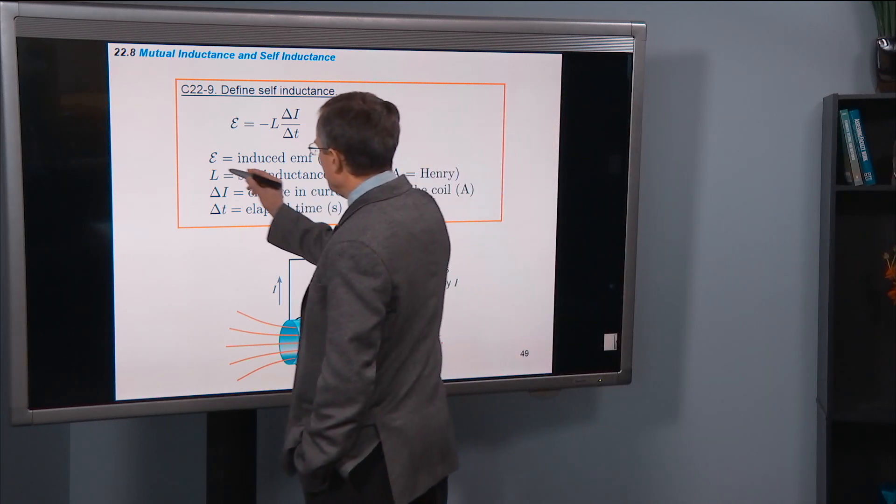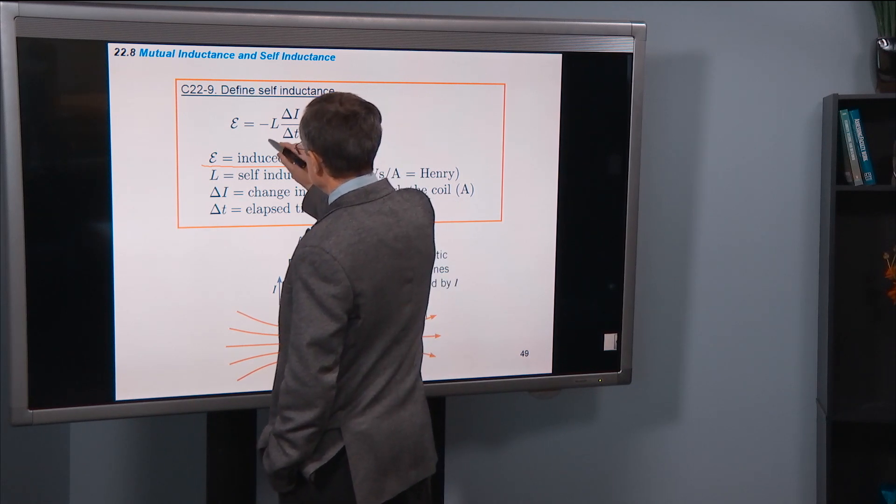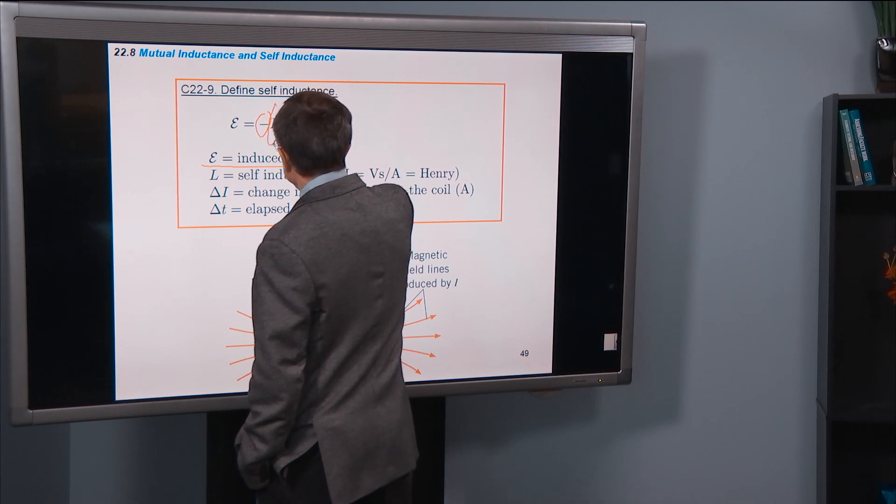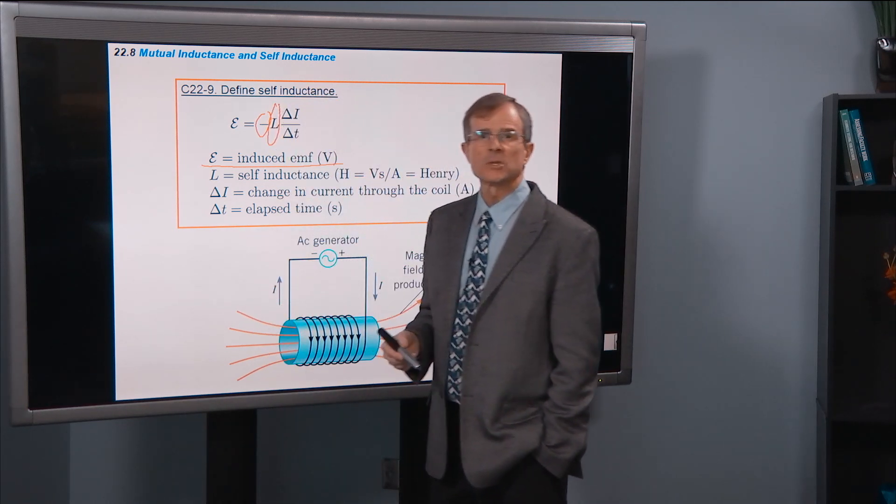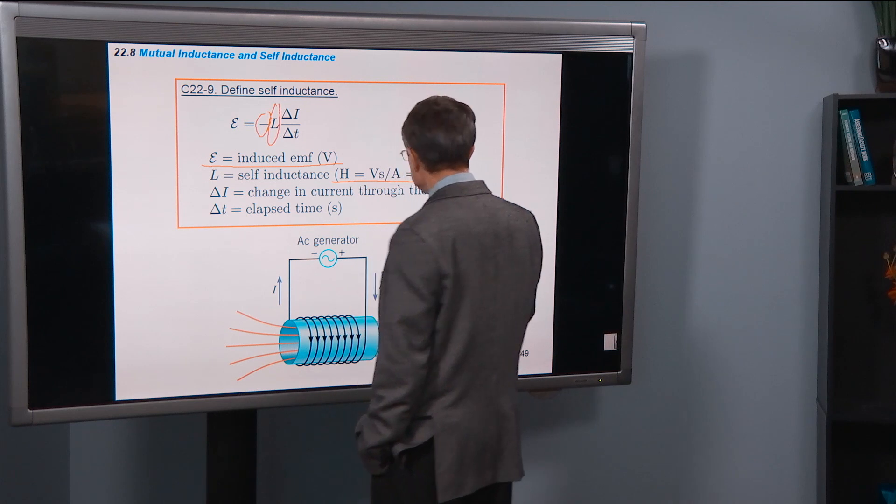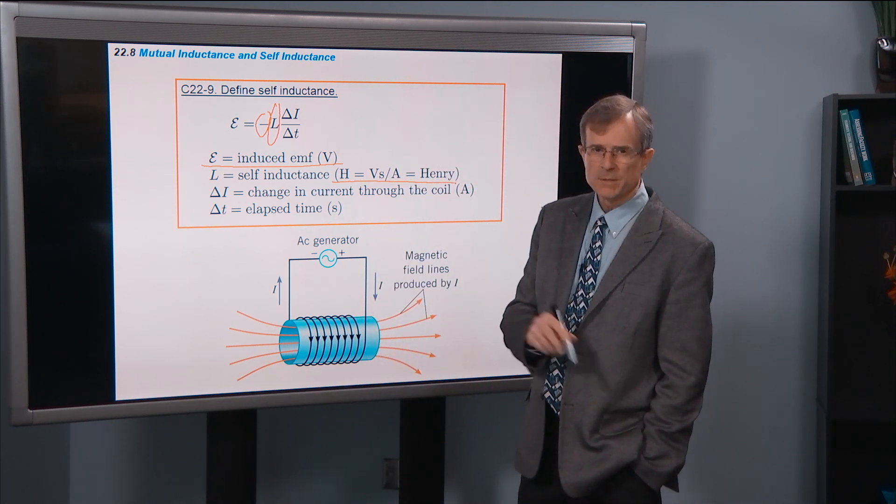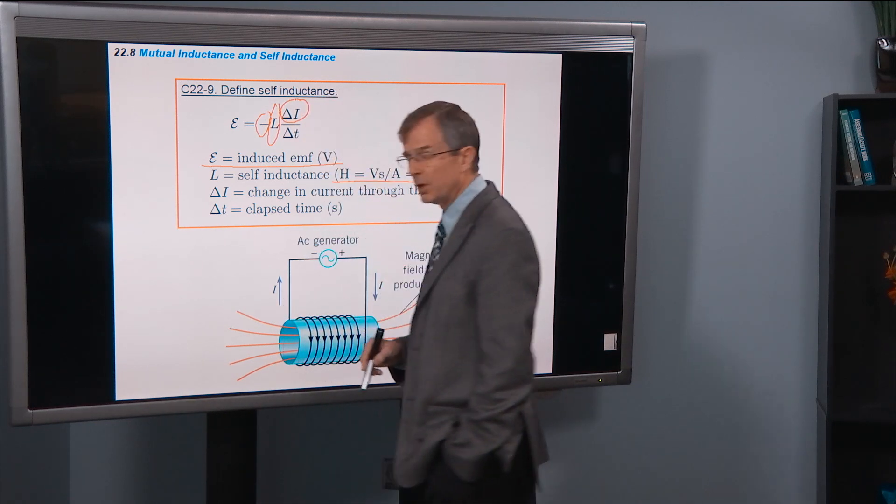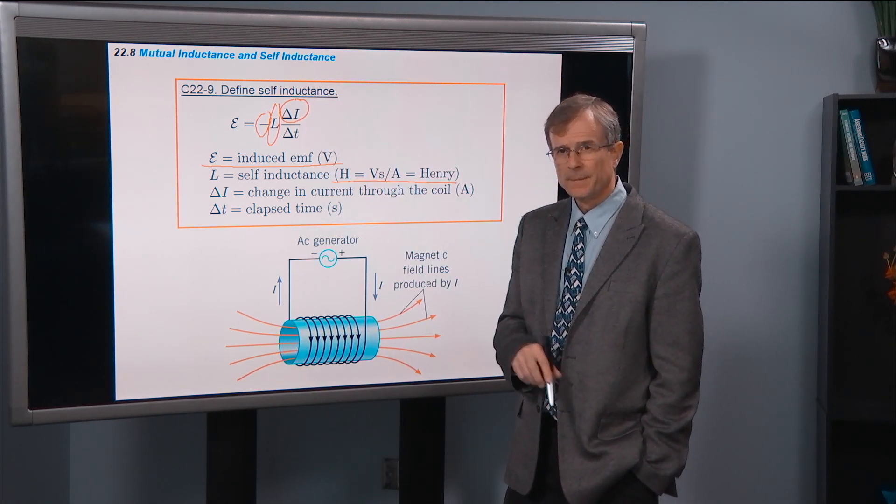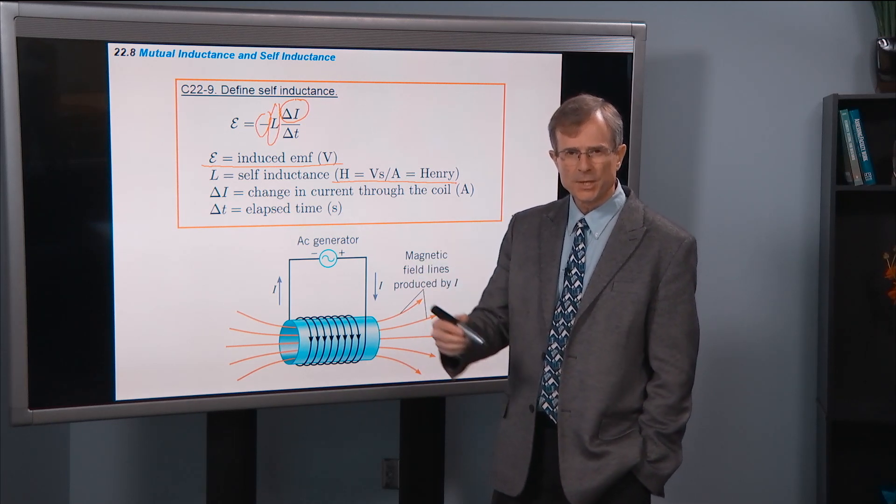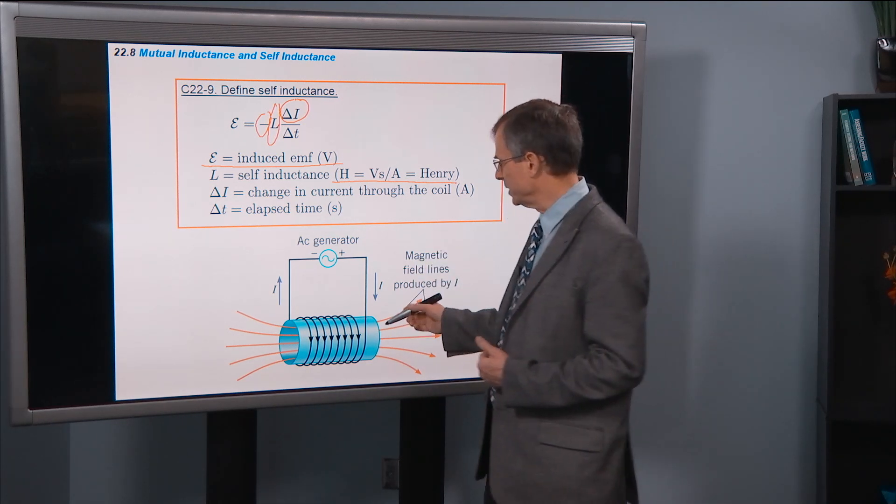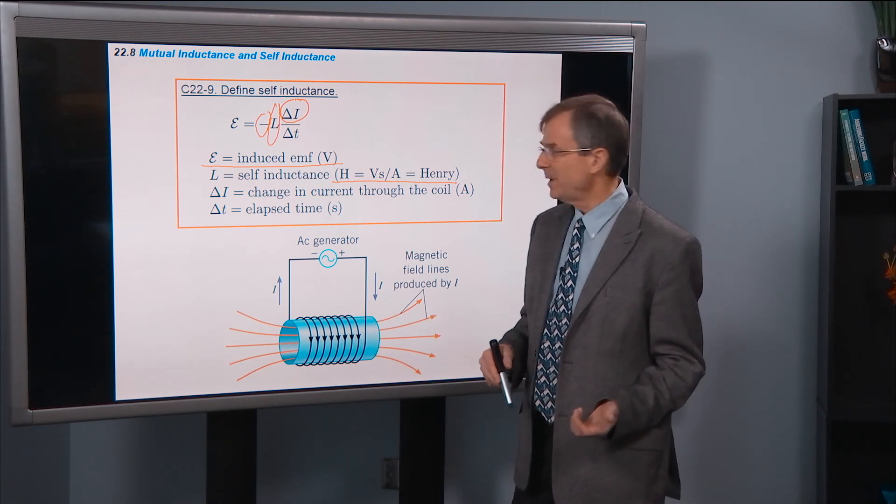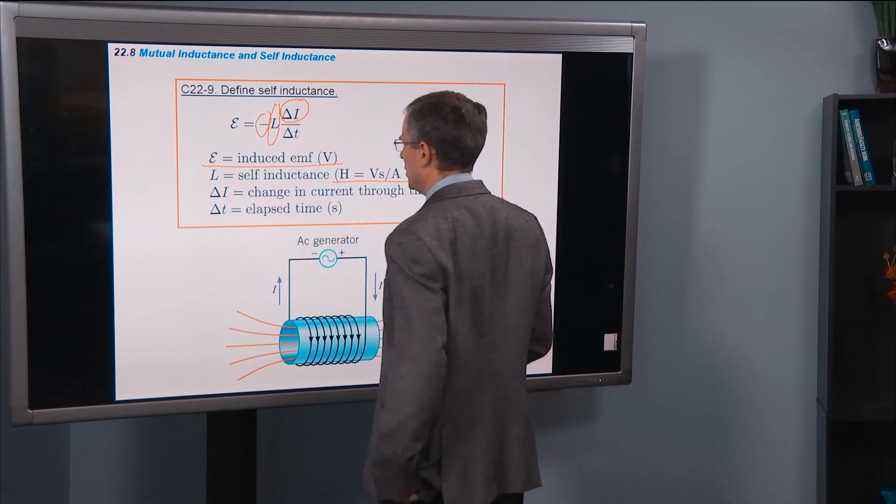The induced EMF in a coil is, there's a minus sign, that looks like Faraday's law again. There's a coefficient of proportionality, in this case it's called L, the self-inductance. Also measured in henrys, the same as the mutual inductance was, times the change in current through that particular coil. That's an applied change in current. Somebody's changing the current through this coil. And the coil doesn't like it. So it induces a back EMF to oppose that change.